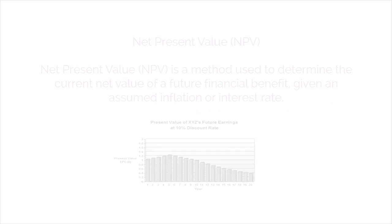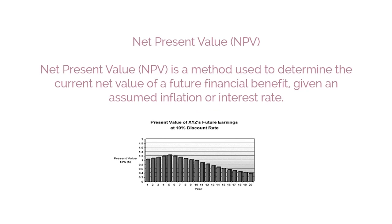The second method is net present value. Net present value is a method used to determine the current net value of a future financial benefit, given an assumed inflation or interest rate.